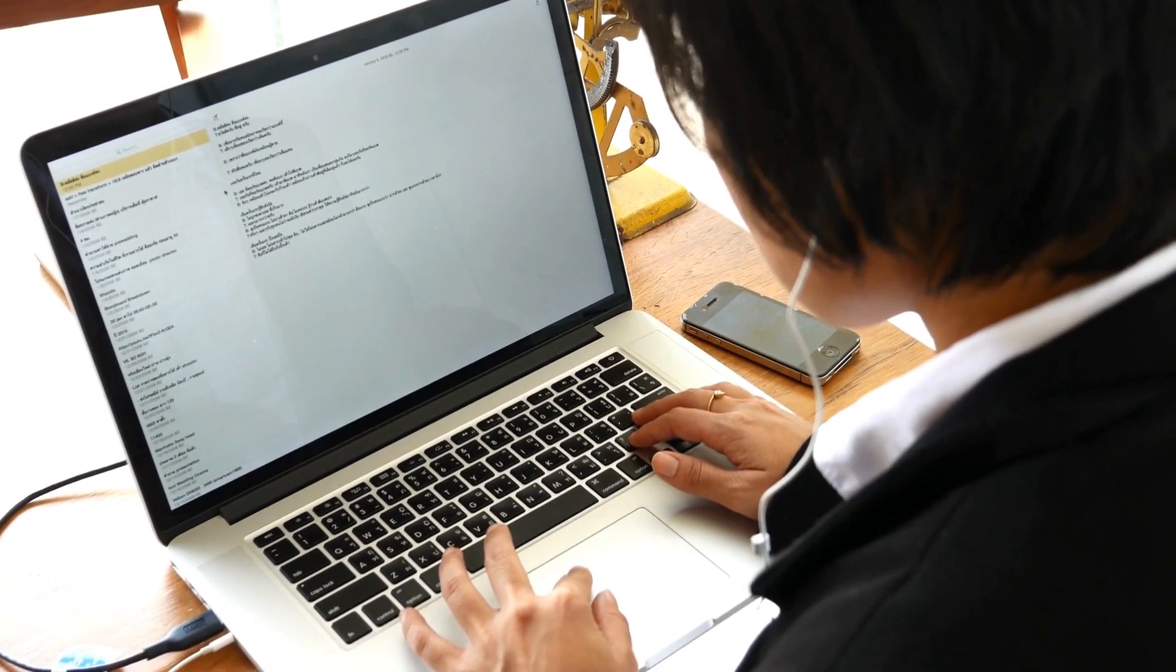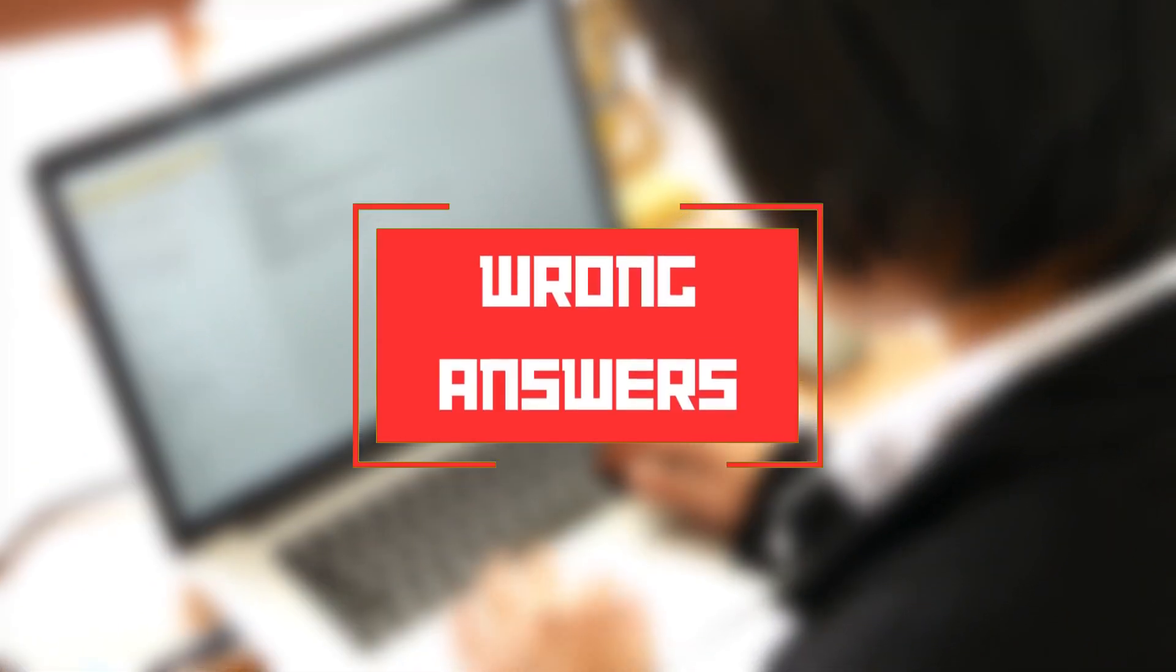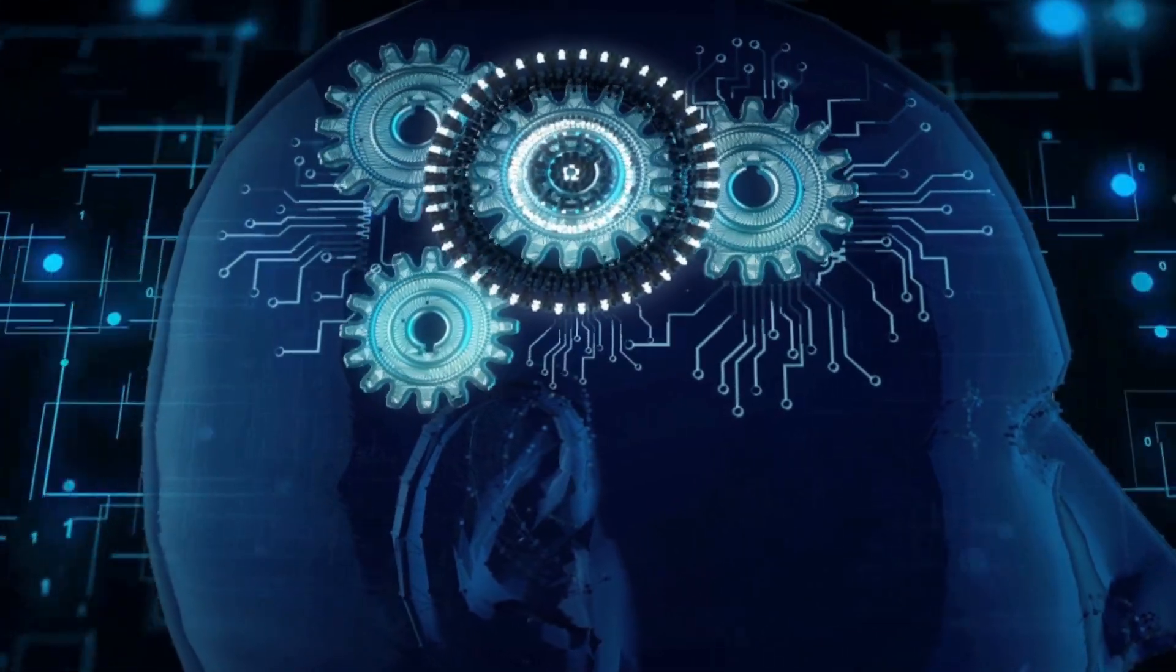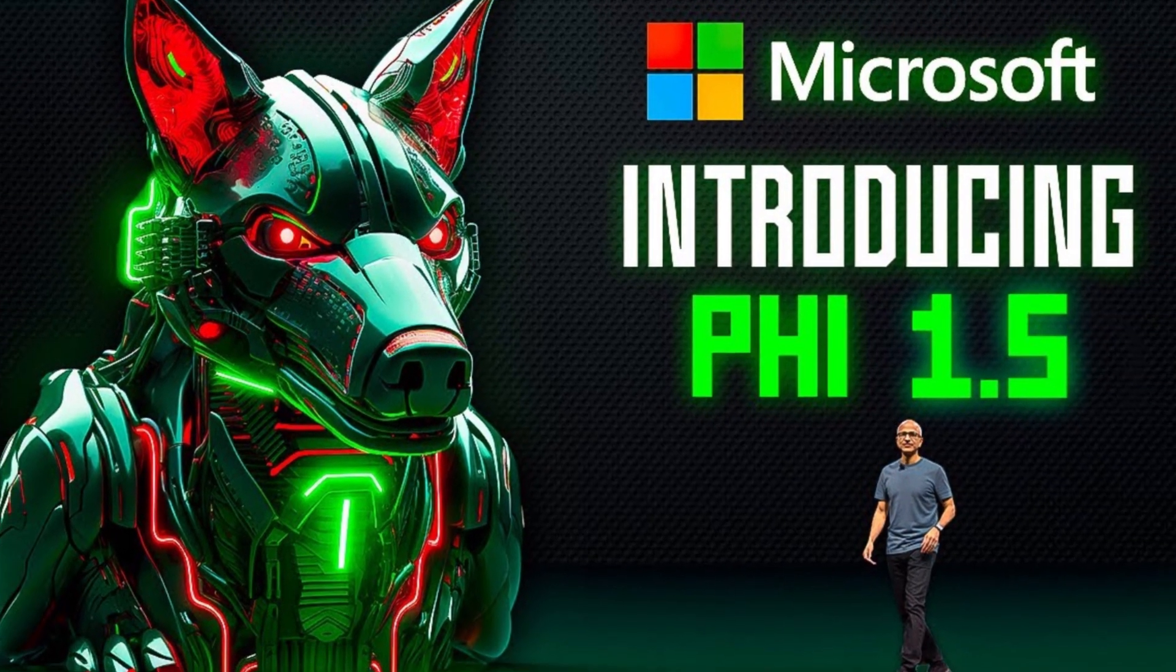But users often complained about these large language models giving wrong answers. The model also fumbled when confronted with complex tasks and failed to show common sense in some situations. And that's where Microsoft PHI 1.5 comes in.